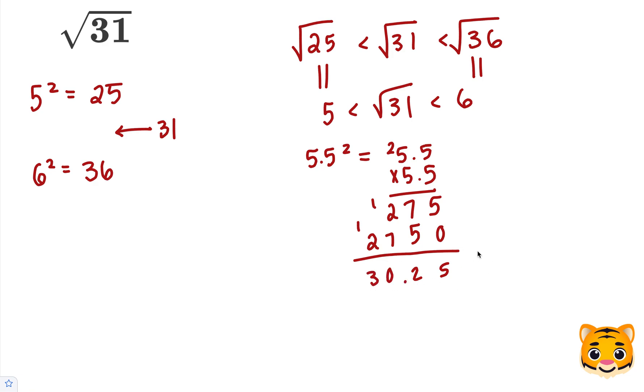Which is fairly close to 31. But let's try 5.6 squared to see if we can get closer. 6 times 6 is 36, carry the 3. 5 times 6 is 30, plus 3 is 33. Add our 0.